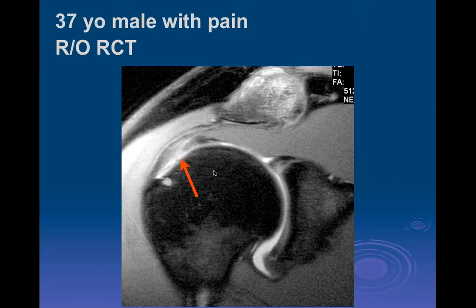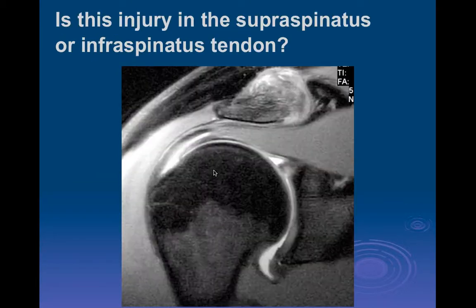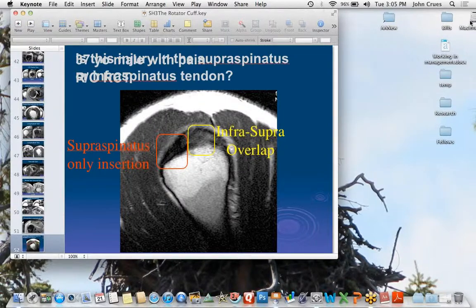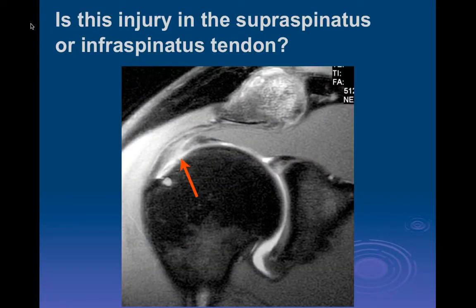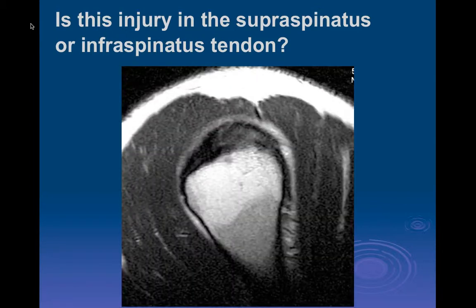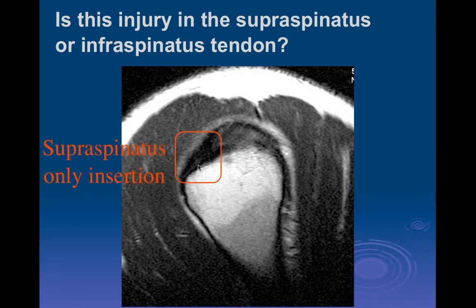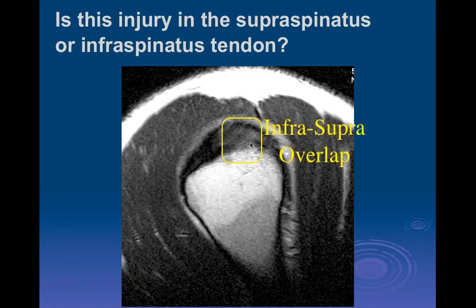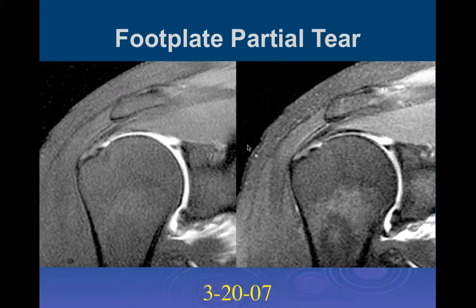This is actually a tear of the infraspinatus, even though it looks like it's in the plane of the supraspinatus, because of the overlap of those fibers where they insert. That makes it a continuous sheet over the superior and posterior aspect of the rotator cuff. On the sagittal images you can see the overlap fiber region: anteriorly you have only supraspinatus tendon, then the overlap region with both infraspinatus and supraspinatus, then more posteriorly the infraspinatus, and further down the teres minor insertions.